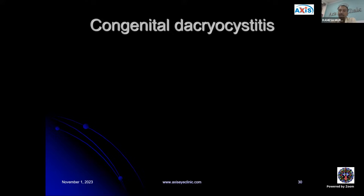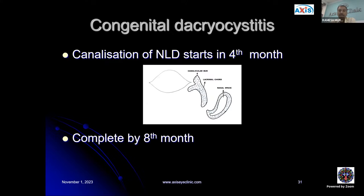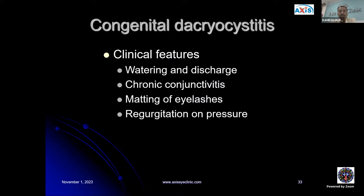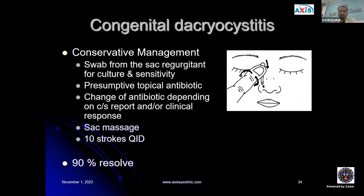Congenital dacryocystitis is infection in the lacrimal sac region, most commonly due to nasolacrimal duct obstruction. Canalization of the nasolacrimal duct starts in the fourth month and is complete by the eighth month. Failure of canalization at the valve of Hasner causes CNLDO, which in turn gives rise to dacryocystitis. The incidence of nasolacrimal duct obstruction in term babies is 30%; in Down syndrome it is 22–36%, but a symptomatic block is seen in only 2–6% of cases. Onset is after three weeks of age. Clinical features include watering and discharge, chronic conjunctivitis, matting of eyelashes, and regurgitation on pressure over the lacrimal sac area. Management begins conservatively: a swab from sac regurgitant for culture and sensitivity, a presumptive topical antibiotic adjusted based on results, and sac massage.